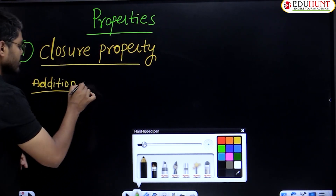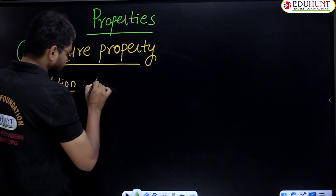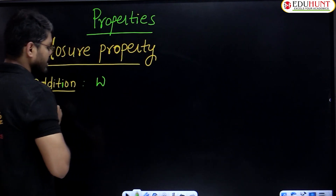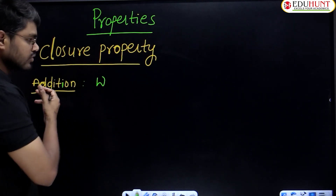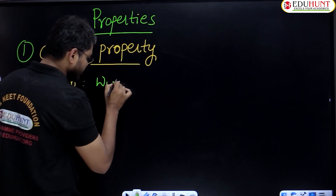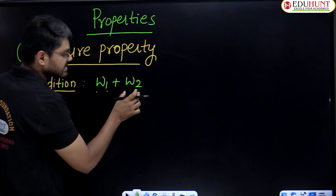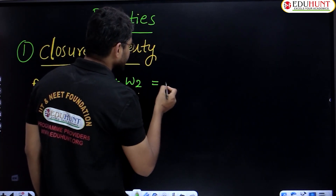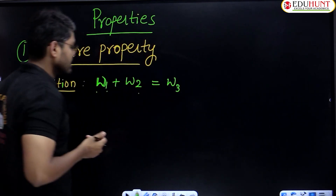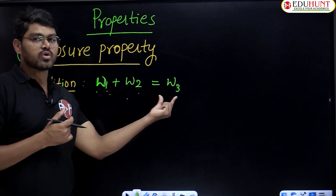Sum of two whole numbers — whole number one plus whole number two — forms another whole number, that is whole number three. So sum of two whole numbers is equal to a whole number.